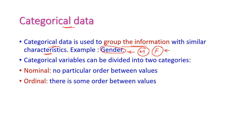We can take another example, that is weather. Weather may contain, for example, four values: sunny, rainy, winter, and cloudy. These are four seasons that will come under the weather attribute.